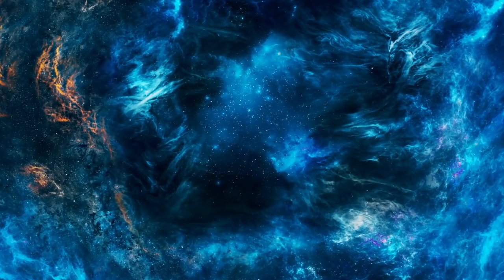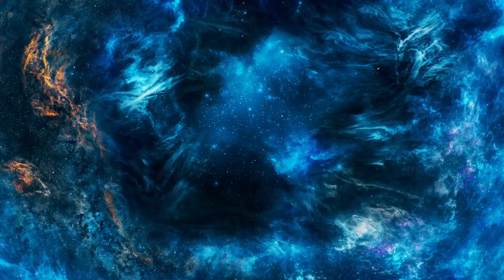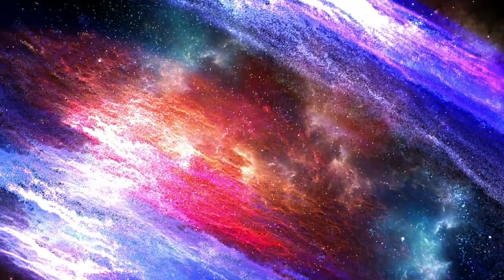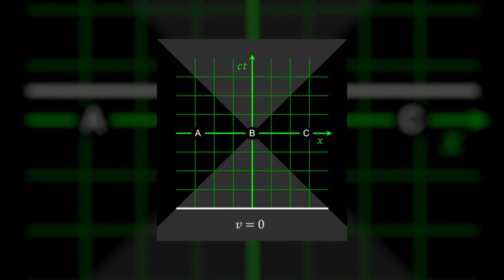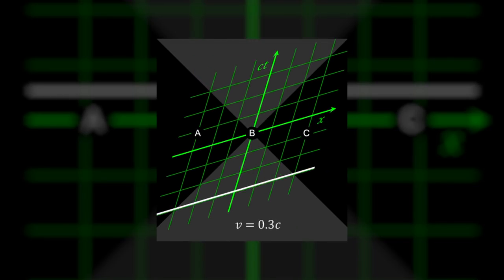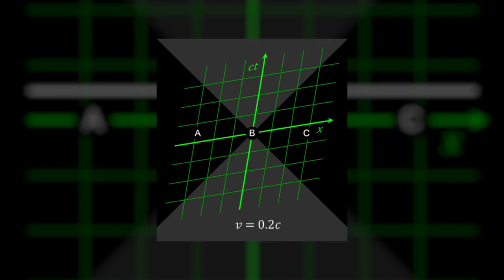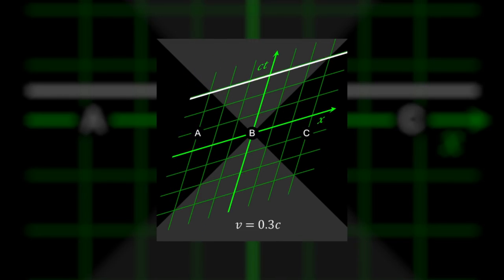Under relativity, whether certain events occur simultaneously is no longer an absolute thing but a relative one. In this fascinating animation, if B is stationary, then events A, B, and C all happen simultaneously. However, if B is moving towards C, B's plane of simultaneity slopes upward, leaving C in its past.